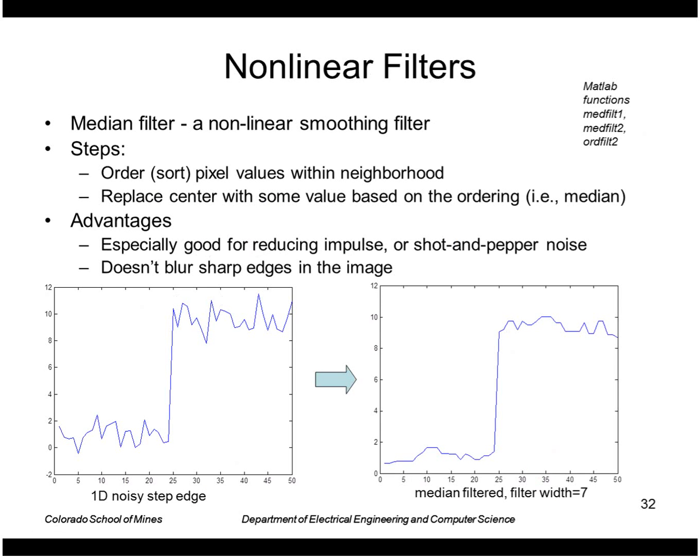Finally, let's look at non-linear filters. We'll look at the median filter here. The median filter says take the pixels in the neighborhood, sort the values, and then the output is the median. This is useful for reducing impulse noise where I have a very large spike or noise value in my image.